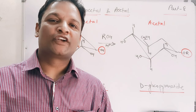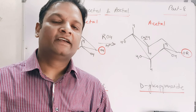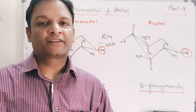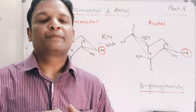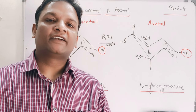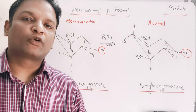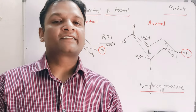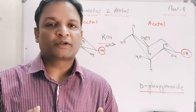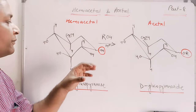Hello students, welcome to a new video. In today's video we will discuss the synthesis and hydrolysis of the acetal compound. Acetal is obtained from the hemiacetal, and as you know, glucose pyranose, fructose, and all different types of monosaccharides usually exist in a hemiacetal form. Let's see what the steps and reactions are.